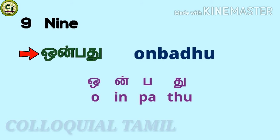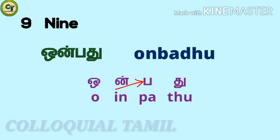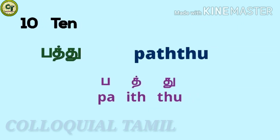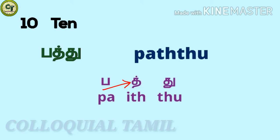For nine: 'onpadu'. O — a short vowel, n with a consonant, p, a short letter, a short letter together: onpadu. For ten: 'pattu'. Pa — a short letter, tt — a consonant, u — a short letter together: pattu.